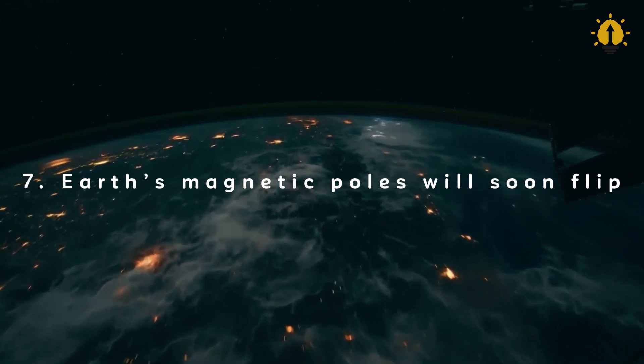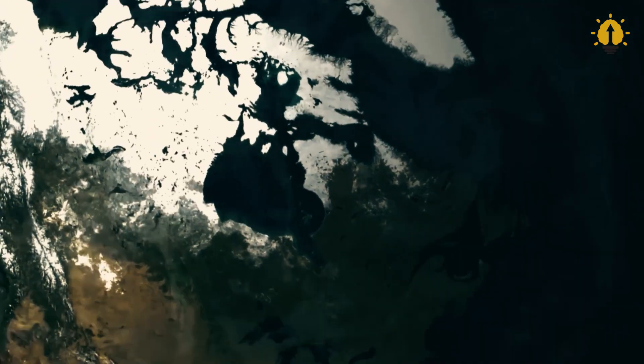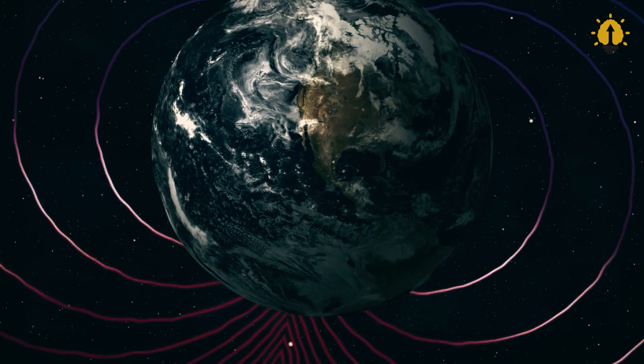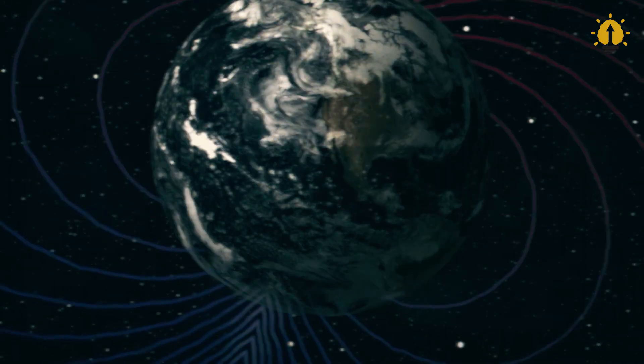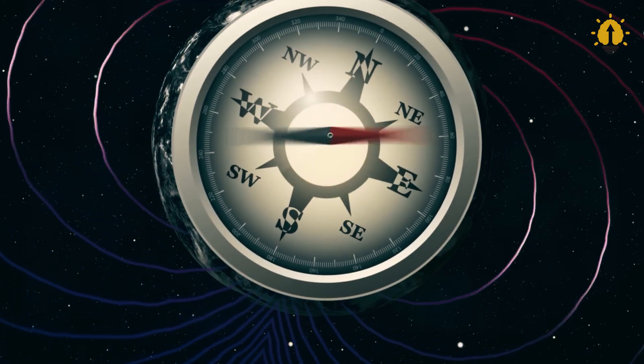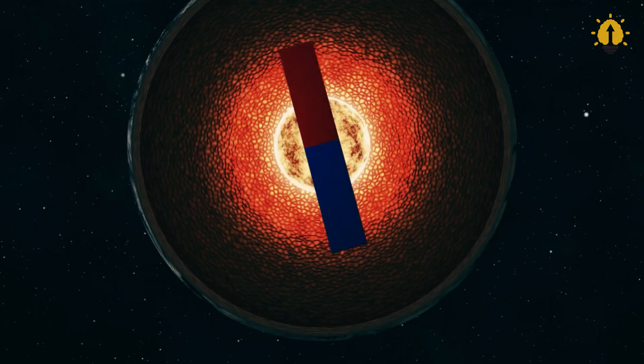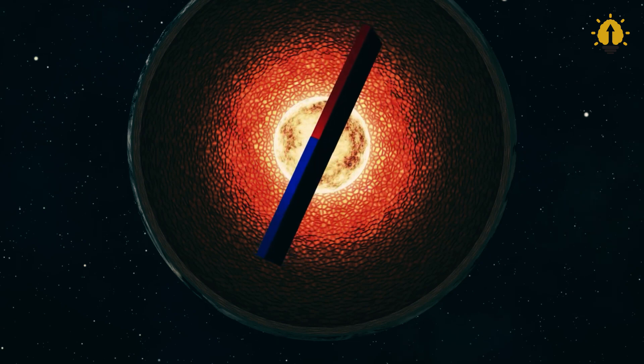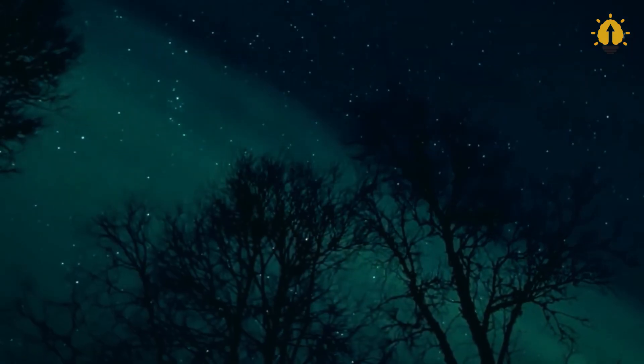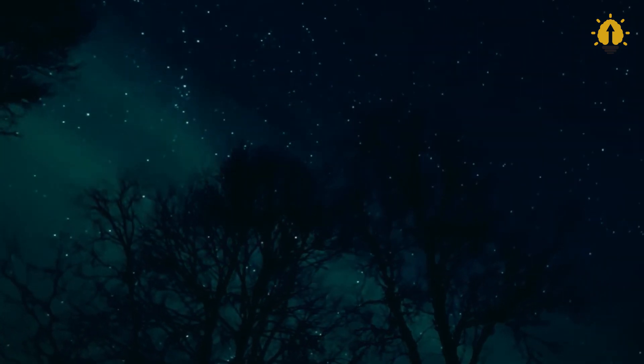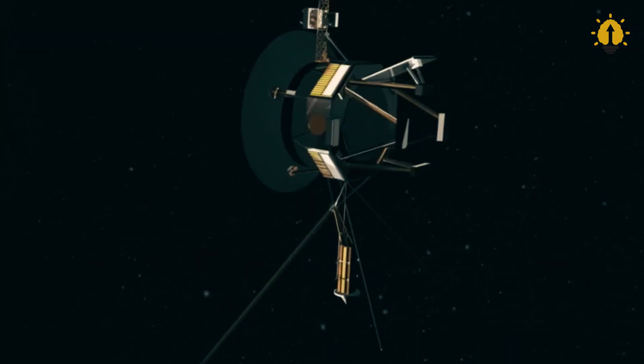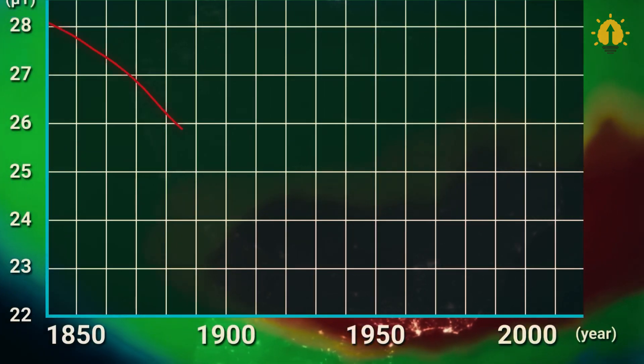Number 7: Earth's Magnetic Poles Will Soon Flip. The idea of the Earth's poles swapping may sound like something out of a doomsday movie, but it's actually a completely natural event that has occurred numerous times in our planet's history. Think of it as a cosmic dance routine that Earth performs every few hundred thousand years. In the past 20 million years, the North and South magnetic poles have traded places roughly every 200,000 to 300,000 years. The last switch-up happened about 780,000 years ago, which means we're due for the next one. Recent data from the European Space Agency satellites indicates that the magnetic field is already in the early stages of shuffling around. But here's the kicker, scientists can't pinpoint the exact date when this magnetic pole flip will happen.